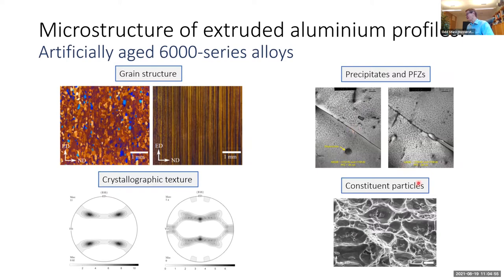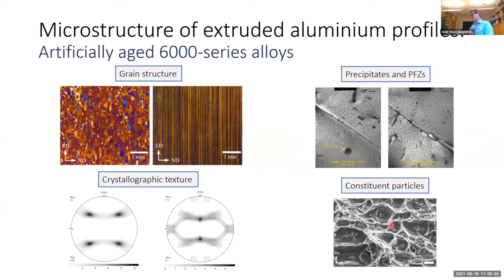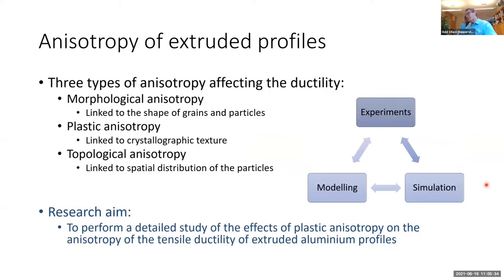We also have constituent particles, which are bigger — around one micrometer — and it is around these particles that voids nucleate, grow, and coalesce, leading to ductile fracture. A typical fracture surface shows dimples with constituent particles at the bottom; some of them have cracked, which can occur either during the extrusion process or during subsequent deformation. In summary, it is a rather complex microstructure.